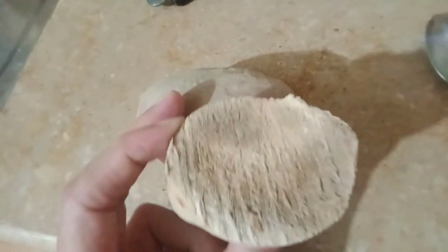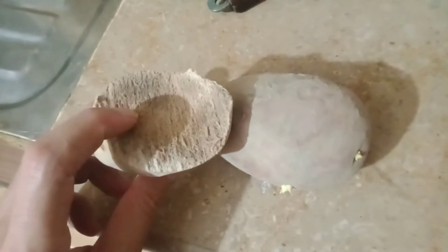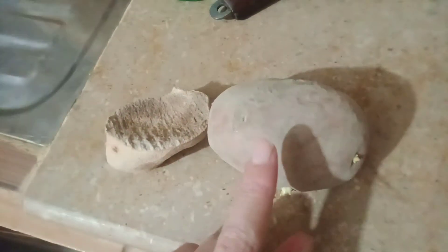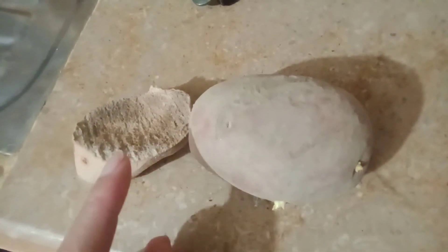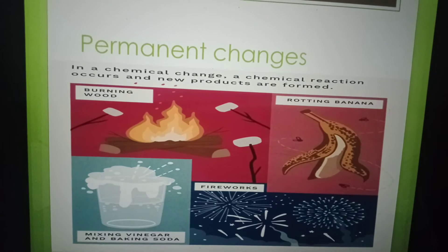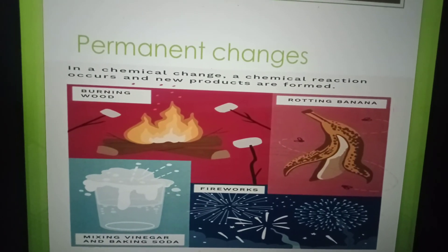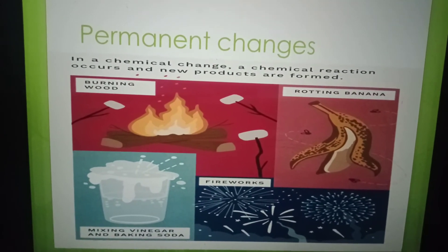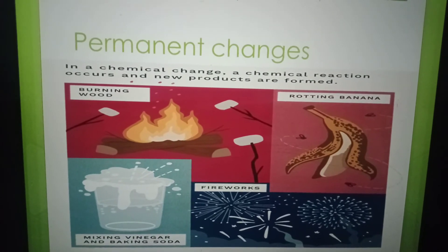This potato has been converted into this one and will not change back into its original form, so it is an example of permanent change. In a chemical change, a chemical reaction occurs and new products are formed. Examples include burning wood, mixing vinegar and baking soda, fireworks, and rotting banana.